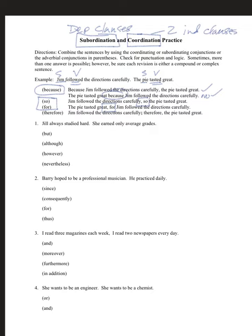We can also use the coordinating conjunction 'for': the pie tasted great, for Jim followed the directions carefully. And using a conjunctive adverb: Jim followed the directions carefully; therefore, the pie tasted great — requiring a semicolon before and a comma after 'therefore.'